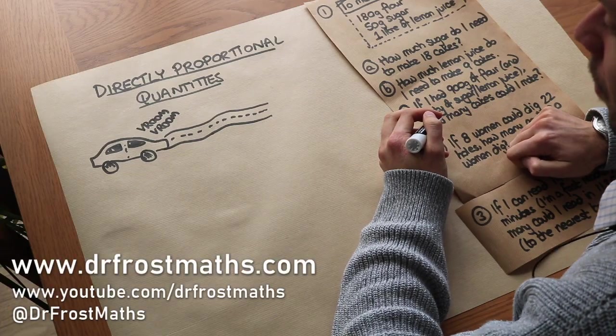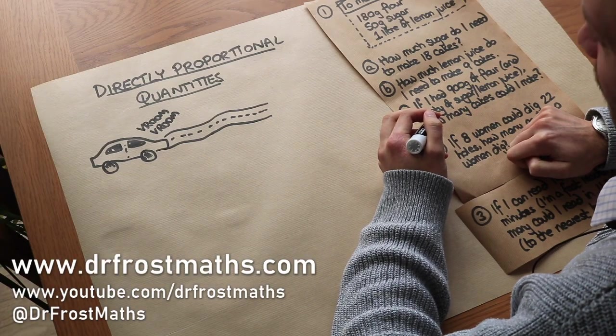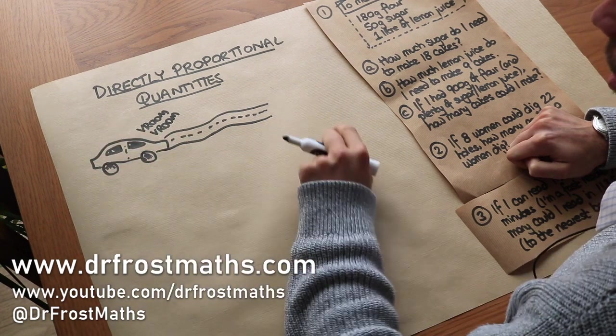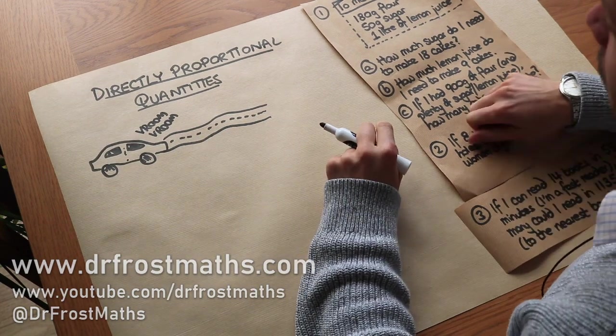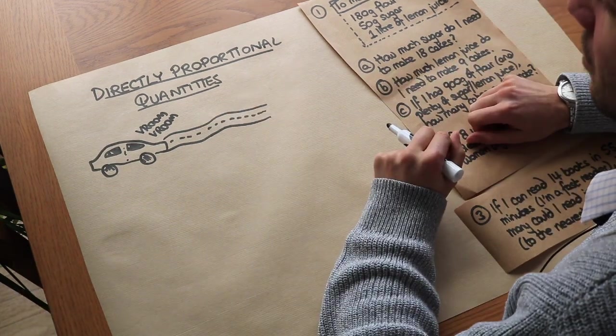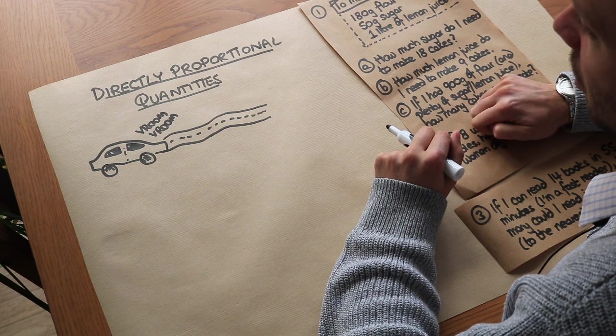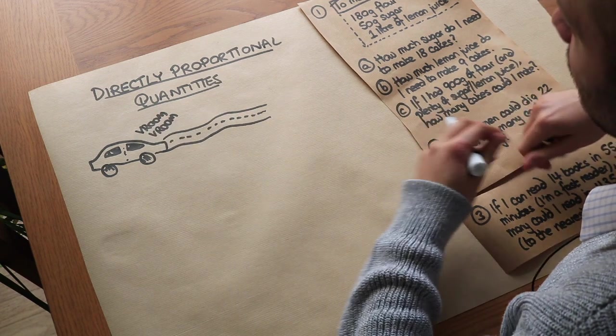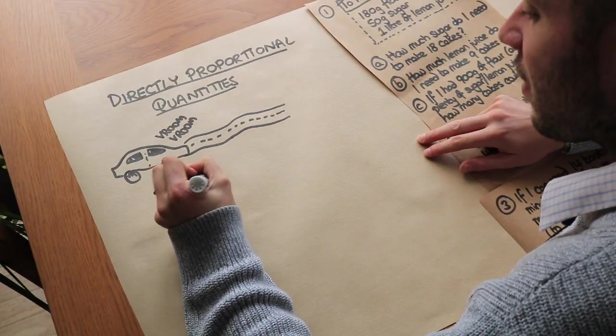Hello and welcome to this video on directly proportional quantities. Let's say that we're in this car and we're driving along and we have a particular fixed amount of time that we're allowed to drive for. Let's say it's a test drive - we've given a certain amount of time we're allowed to drive.